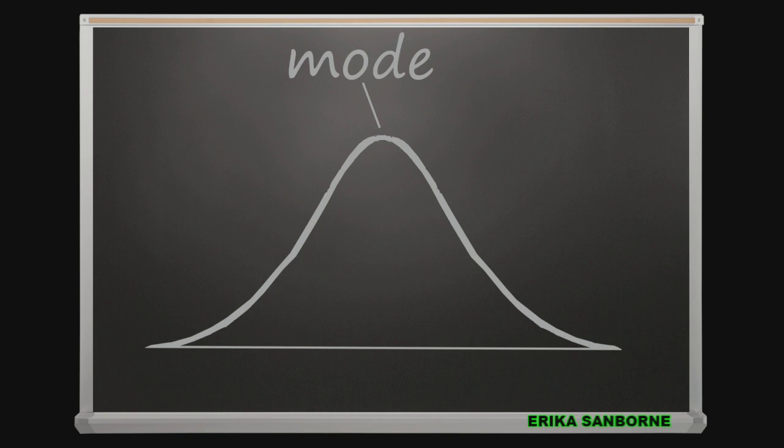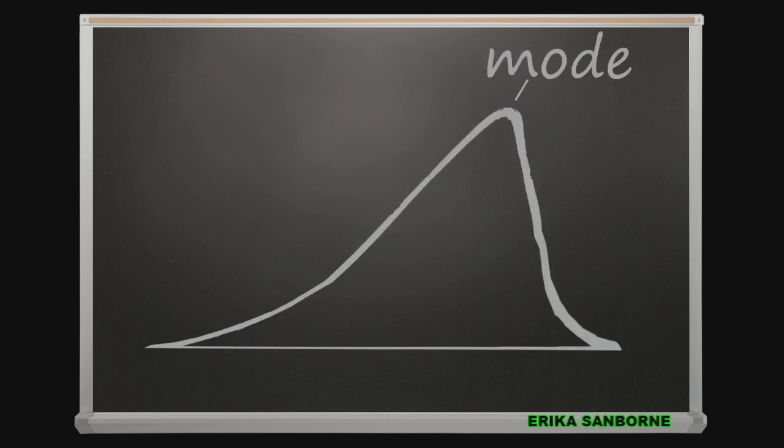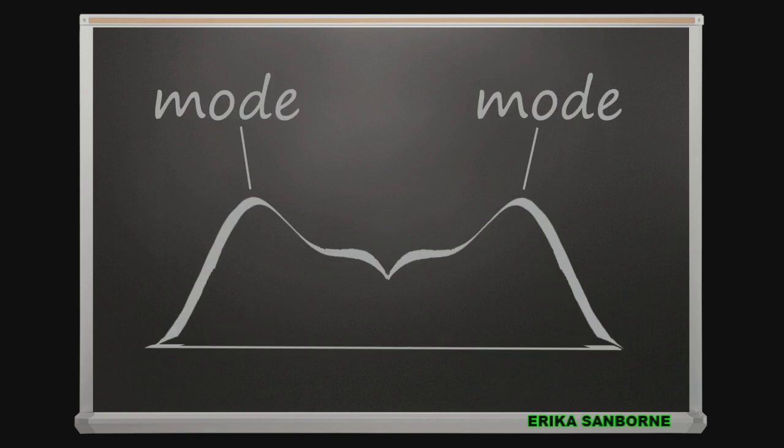It's the most popular score. It's the team with the most players. It can be anywhere in the distribution, in the middle or the right. The highest point is the mode. If there are two high points, then there are two modes.